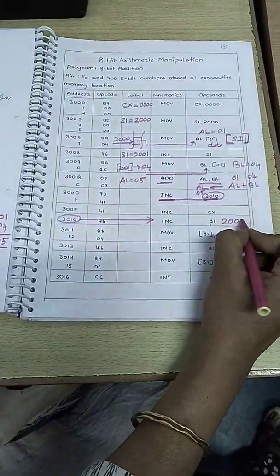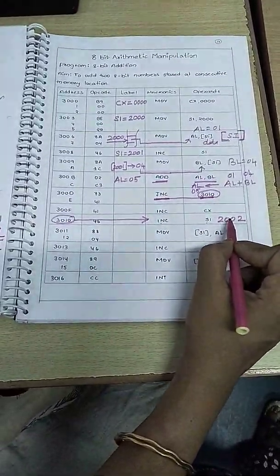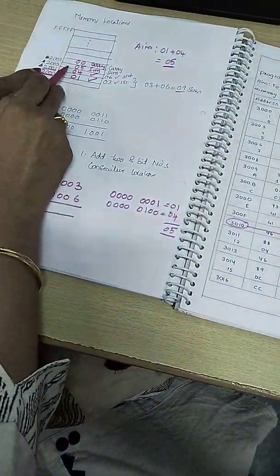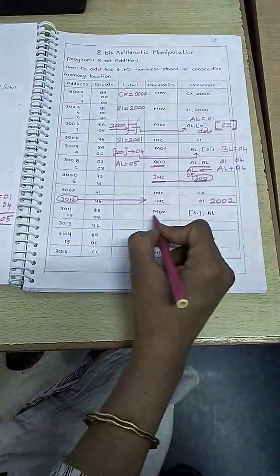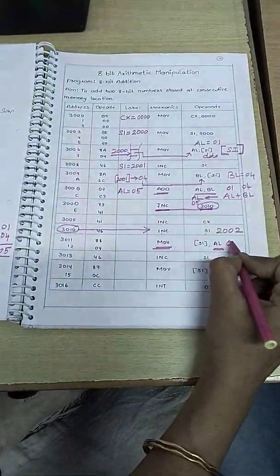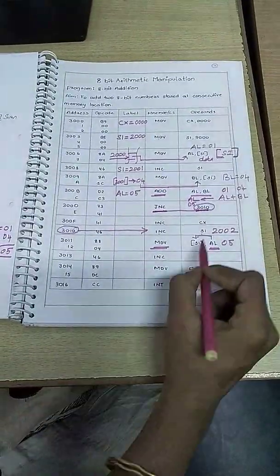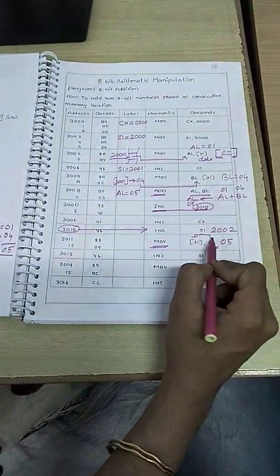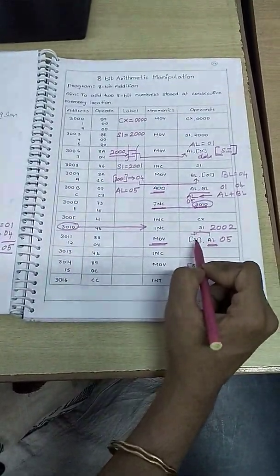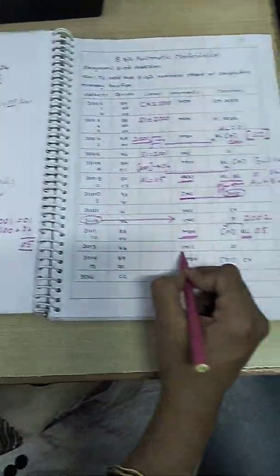The current value of SI is 2001. After incrementing, SI becomes 2002. Now we store the sum — which is in AL — to the memory location pointed by SI. SI is 2002, so the data 05 will be written to memory location 2002. Then we increment SI again.